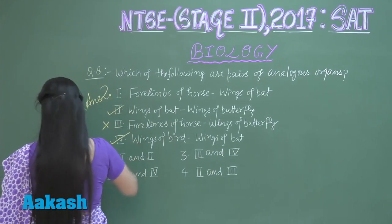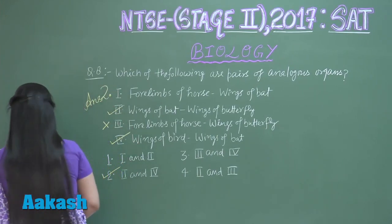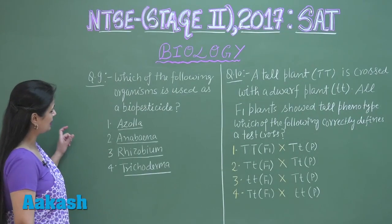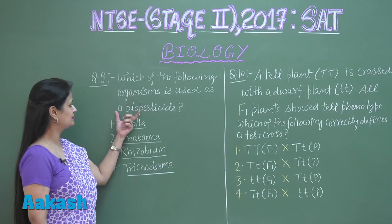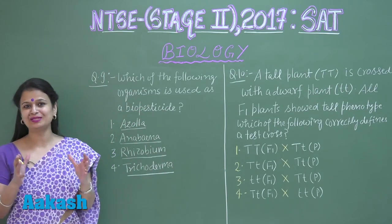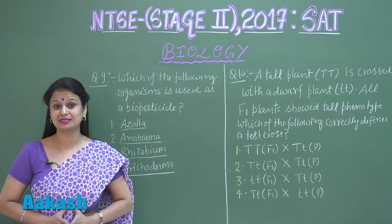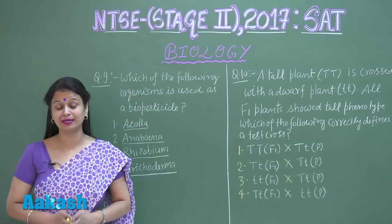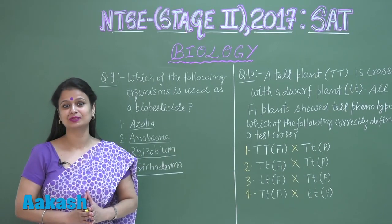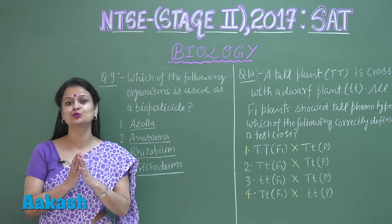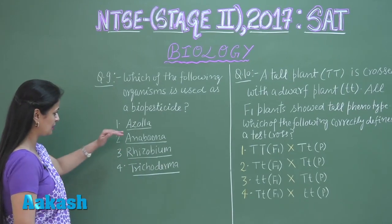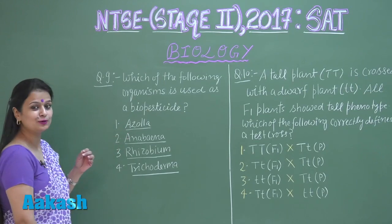In question number nine, we have to look for the organism used as a biopesticide. Biopesticide ka matlab hai ki living organism ya us ke component ko hum use karte hai for controlling the pest. Looking at the first option — Azola — Azola is an aquatic fern.